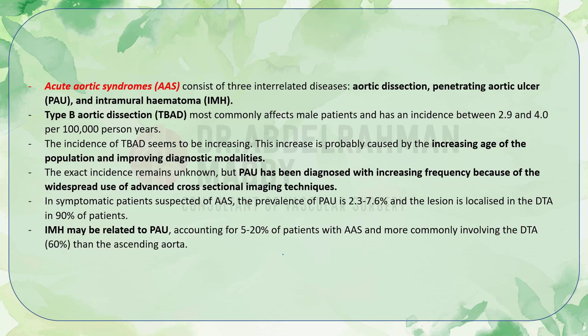Acute aortic syndrome encompasses three interrelated diseases: aortic dissection, penetrating aortic ulcer, and intramural hematoma. When discussing the descending thoracic aorta, we refer to type B aortic dissection, which most commonly affects male patients and has an incidence between 2.9 and 4 per 100,000 person-years. The incidence of type B aortic dissection seems to be increasing, probably due to the aging population and improving diagnostic modalities.